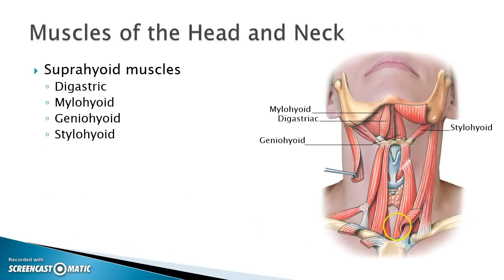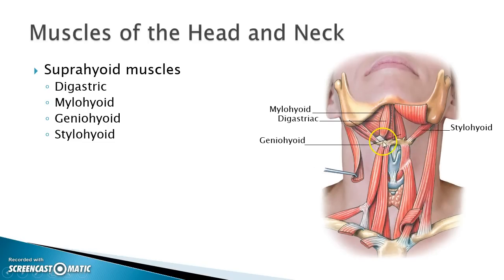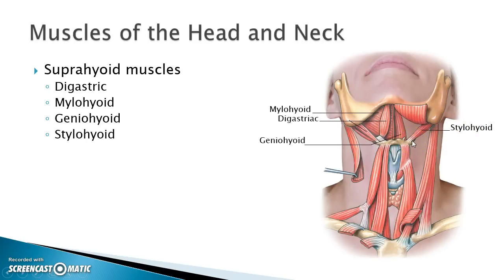Here we have two groups of muscles: the suprahyoid muscles and the infrahyoid muscles. Supra refers to being superior to the hyoid bone — that unique bone that doesn't articulate directly with any other bone. The suprahyoid group includes the digastric muscle, the mylohyoid (which makes up the floor of the chin), the stylohyoid (attaching to the styloid process of the temporal bone and the hyoid), and the geniohyoid, which helps form the floor of the mouth and jawline.